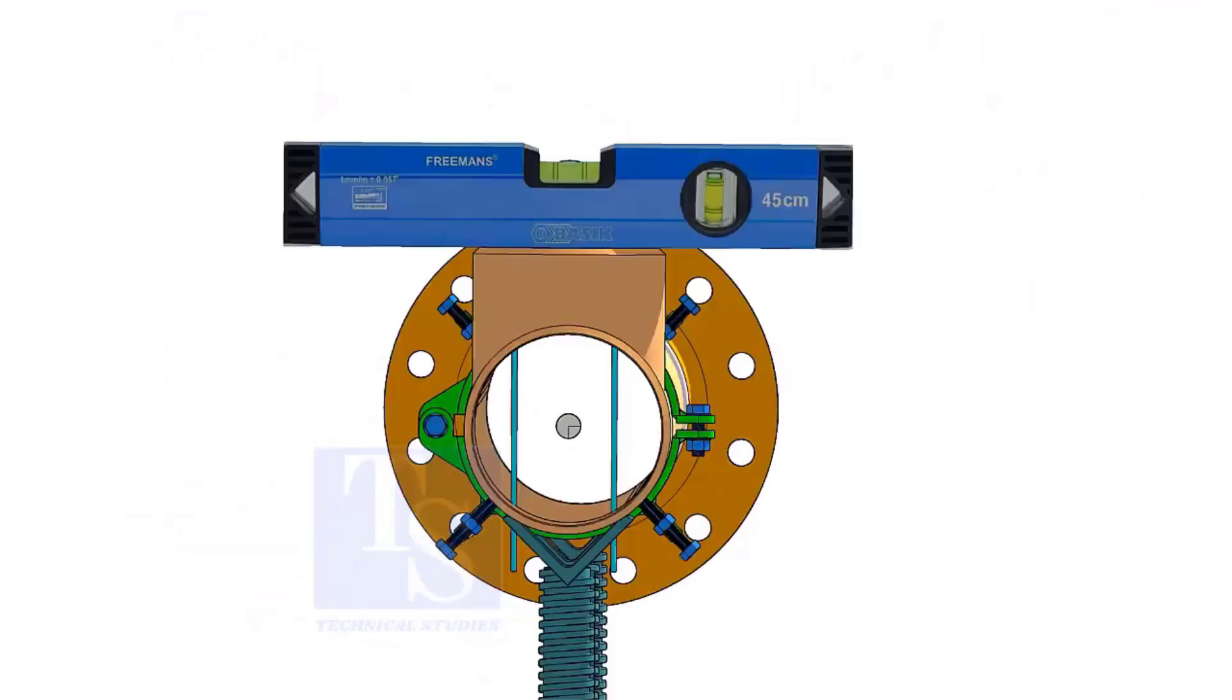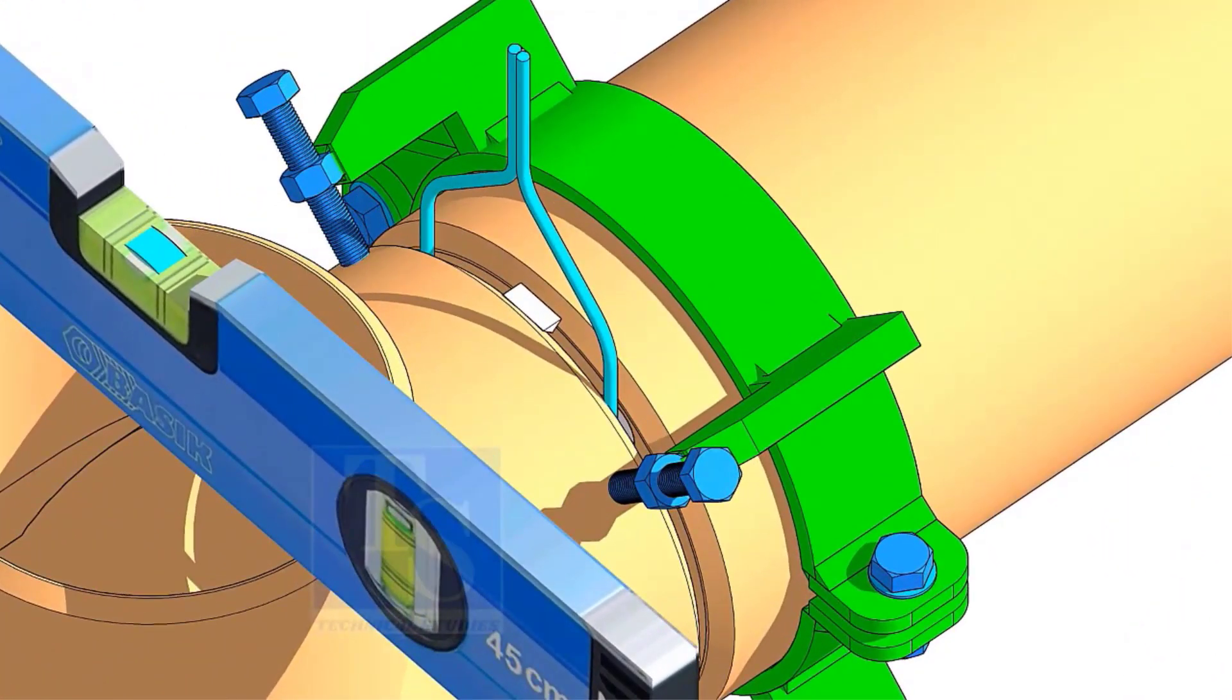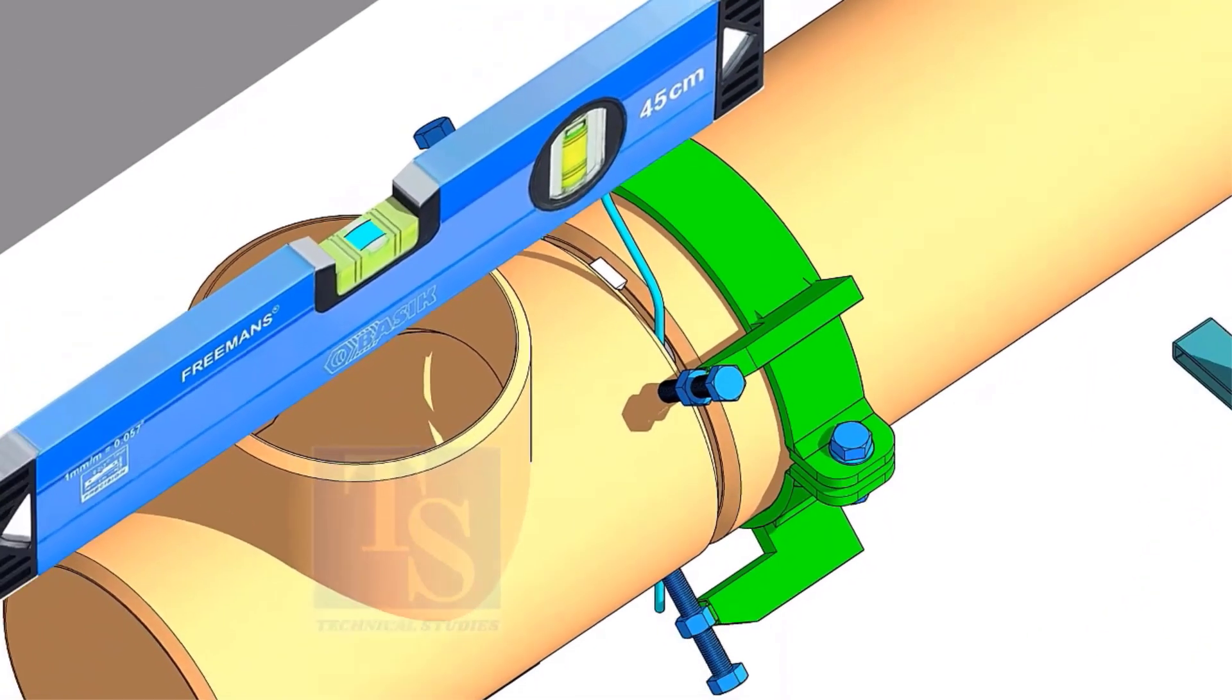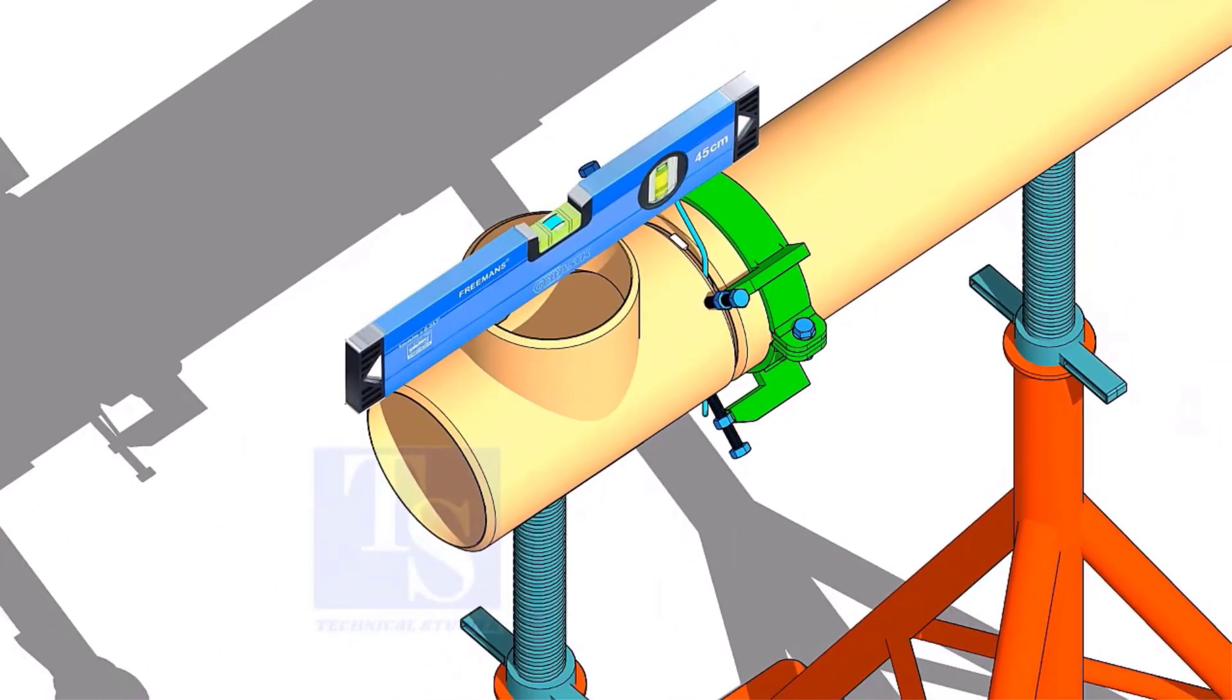Correct the level of the tee as shown. Tack weld on the top of the joint. Correct the level of the tee longitudinally and tack weld on the bottom of the joint.